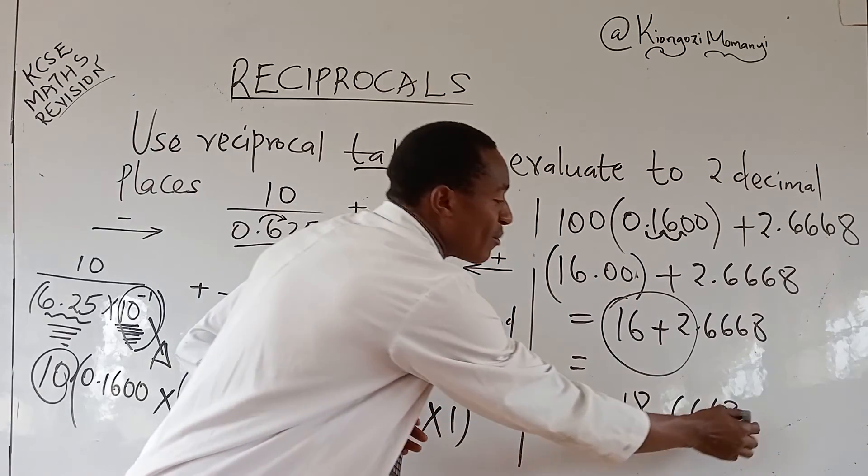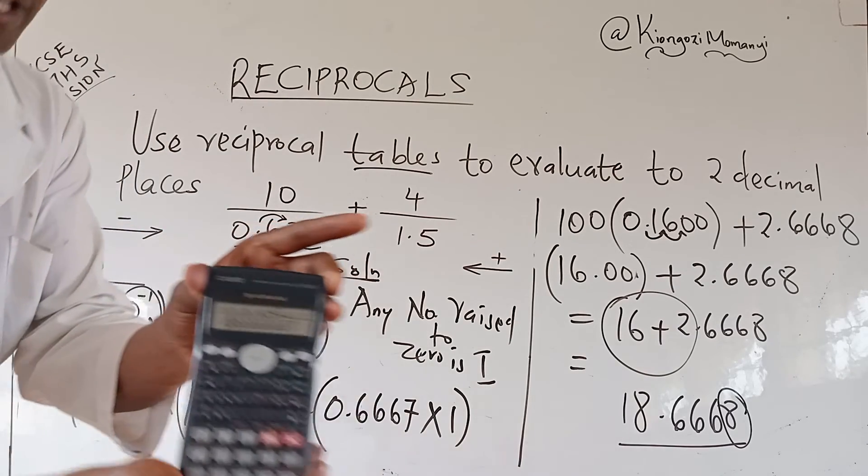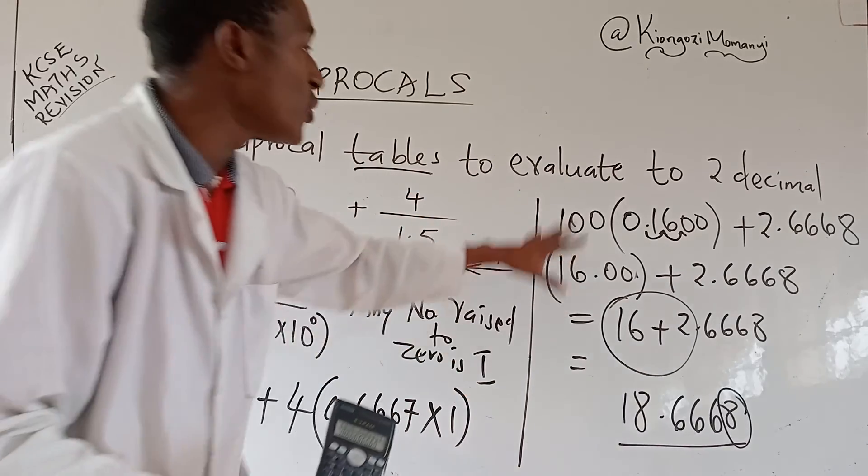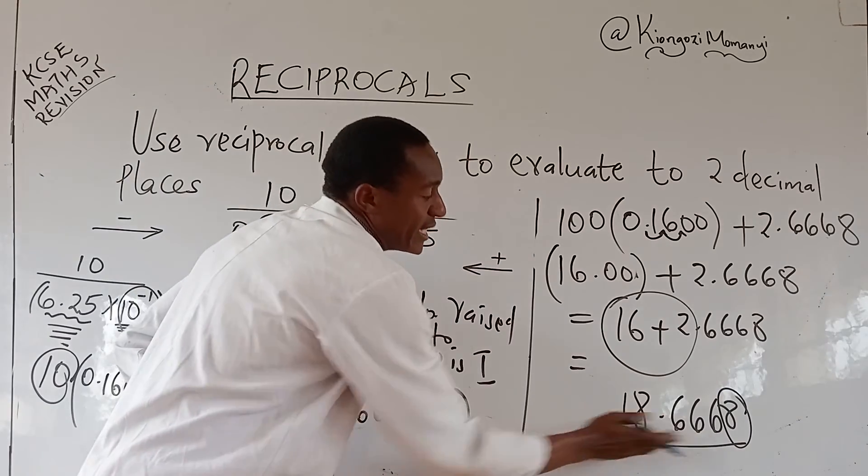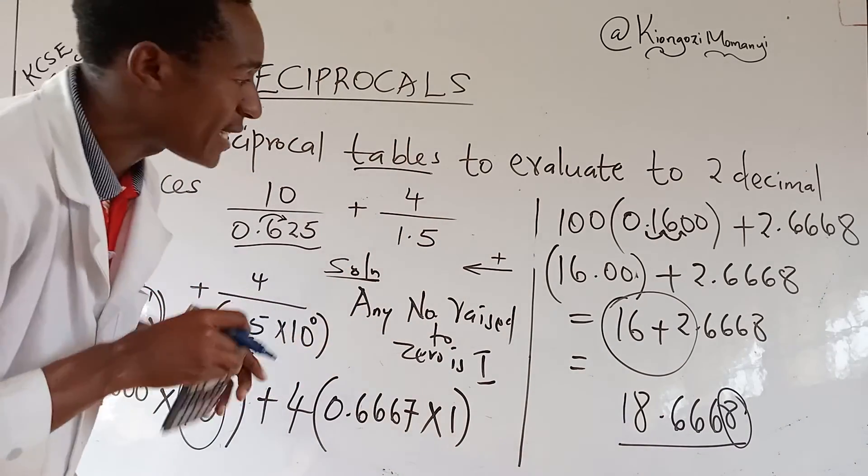So if you used your calculator to read through, this is the value that you are going to get. But if you use the table, you get a slightly different value. But this one is a confirmation that we are right.